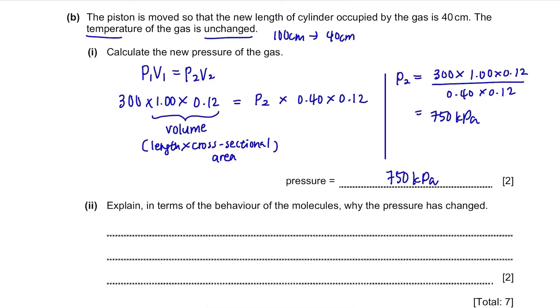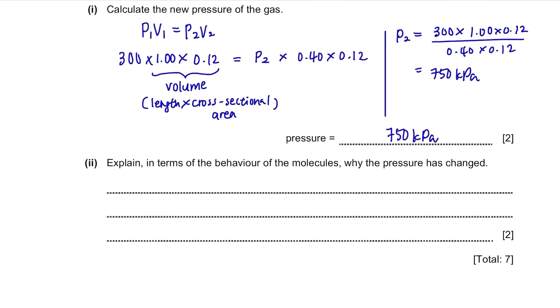Next, explain in terms of the behaviour of the molecules why the pressure has changed. This question is asking how the movement of molecules has changed the pressure. Well, as the volume decreased, the molecules started to collide with walls more often. As a result, there was greater force exerted per unit area, increasing the pressure.